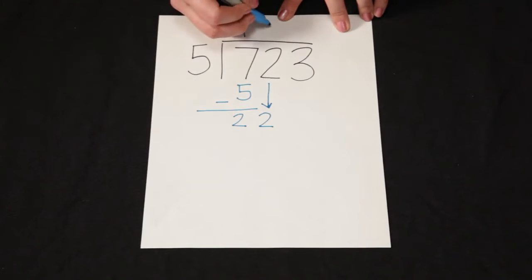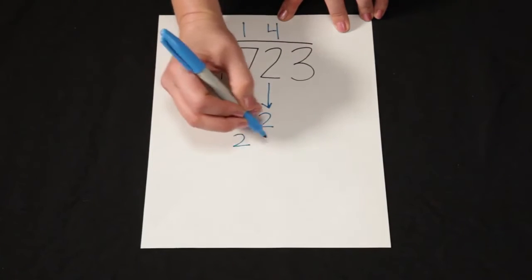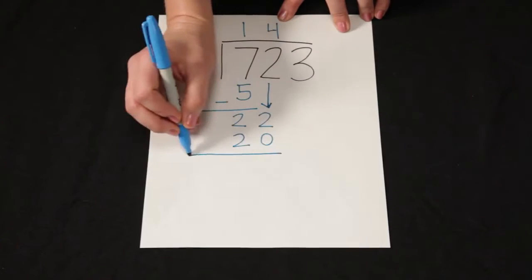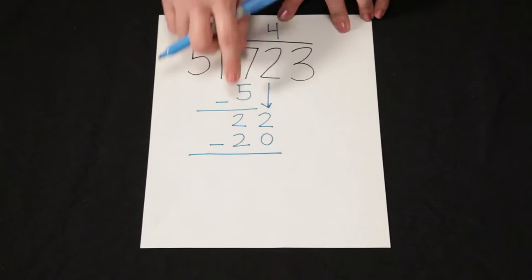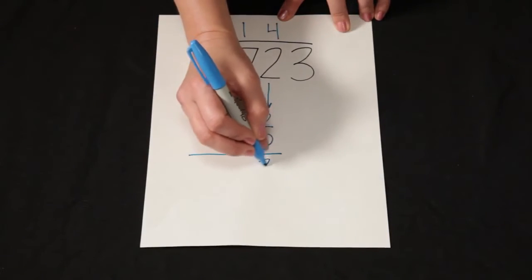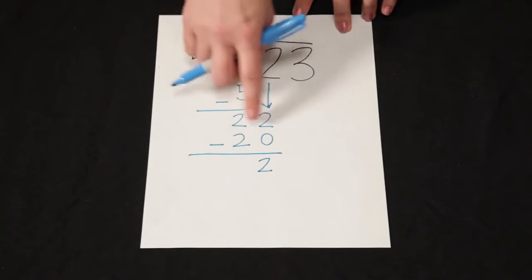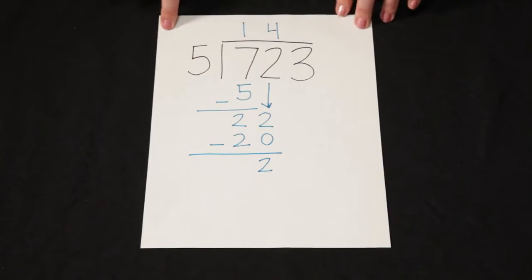5 times 4 is 20. So I can make 4 groups of 5. I'm going to subtract to figure out how many I have remaining. 22 minus 20 is 2. So 5 times 4 is 20 with a remainder of 2 when I'm trying to figure out how many groups of 5 in 22.